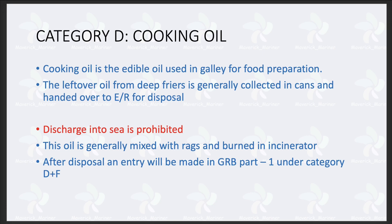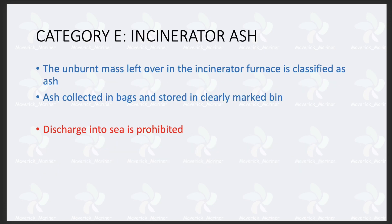Now we will see Category E — that is incinerator ash. When we burn in the incinerator — paper, cartons, oily rags, whatever they are mixed with — there will be some unburnt mass left. That cannot be burnt further. So this ash is collected in bags and stored in clearly marked bins.